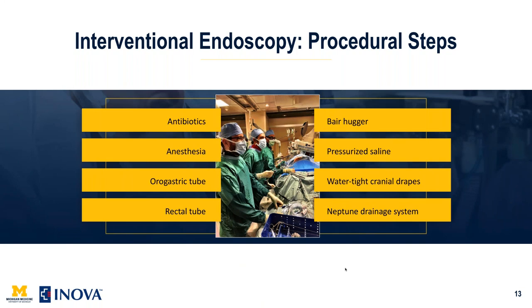Depending on where you perform interventional endoscopy, we typically give antibiotics appropriate to that system — for GI endoscopy, antibiotics covering GI microbes; for procedures through the liver, plan accordingly. Historically at the University of Michigan we used general anesthesia for most patients because these can be long procedures, a lot of fluid is given which can cause electrolyte imbalances, and patients can become hypothermic. However, Johns Hopkins and Mallinckrodt have done these under moderate sedation. General anesthesia helps to be safe and proceed expeditiously.